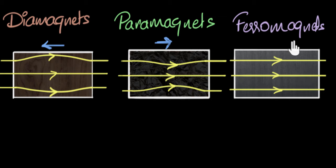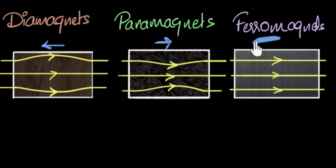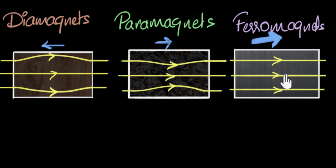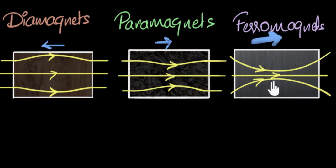Ferromagnets have domains inside, and when you put a strong enough external field, the domains turn and you have superb alignment. As a result, an extremely strong magnetic field is induced inside — much stronger than the external field. The field lines would be very, very close to each other inside the ferromagnet. We'll see just how strong in a moment.